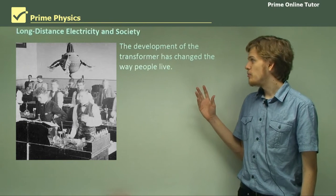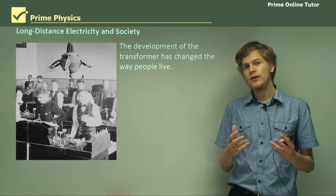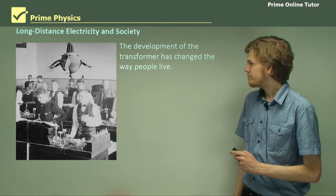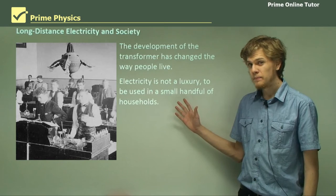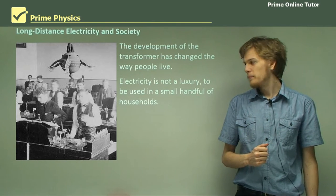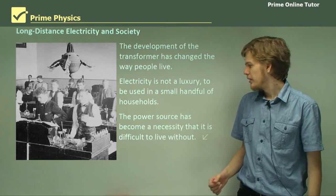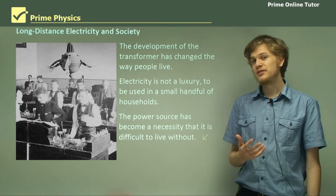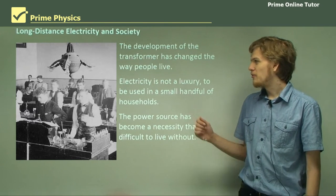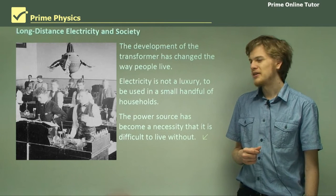So the development of the transformer has made a big difference to the way that people live. It's one of the devices which has made electricity spread to everywhere. So electricity is not a luxury. It is not something for the rich people to afford to power a single electric light in their home. It is in fact pretty much ubiquitous, affordable, and everywhere. It has in fact become a necessity that it is almost impossible not to live in. Over here we have a photograph of one of the first buildings that was constructed with the electric light.